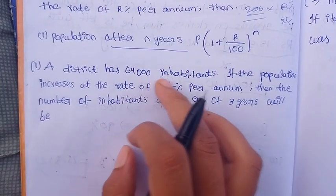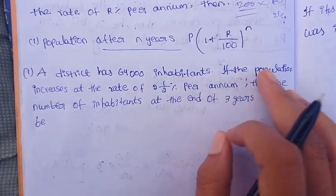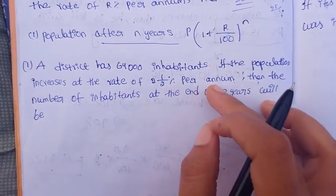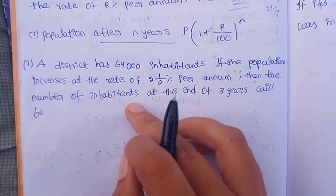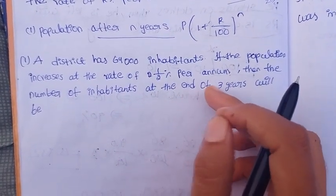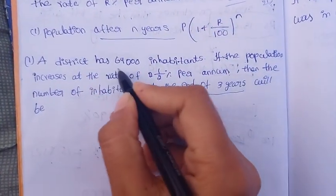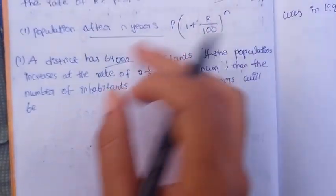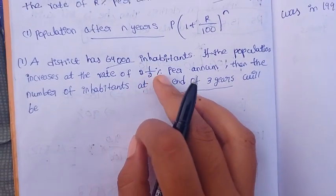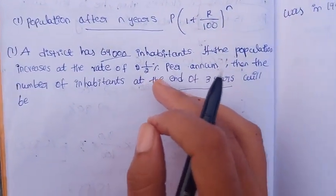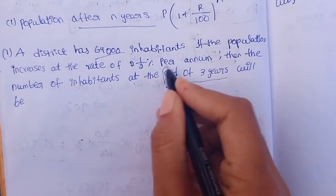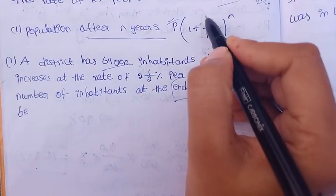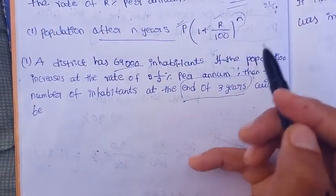A district has 64,000 inhabitants. If the population increases at the rate of 2 and 1/2 percent per annum, then the number of inhabitants at the end of 3 years will be. So P is equal to 64,000, R is equal to 2 and 1/2 percent — which as a mixed fraction converts to 5/2 — and N is equal to 3.